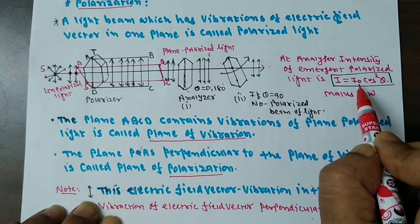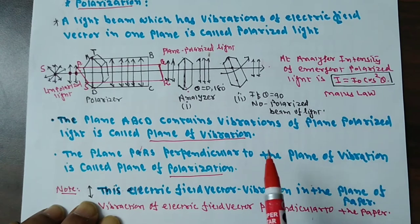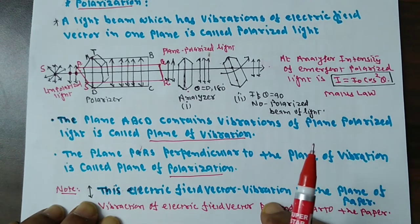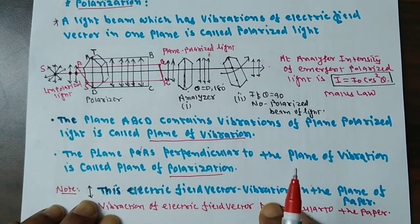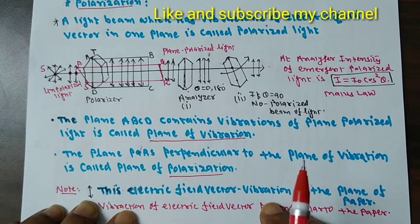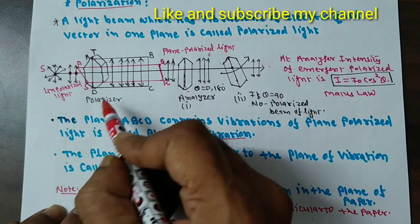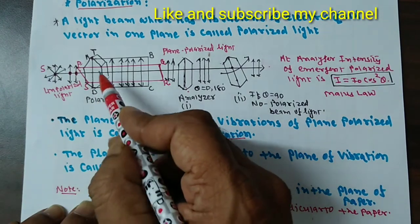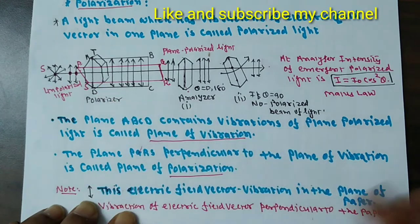I₀ is the initial intensity of light. In this way, we produce polarized light with the help of a polarizer or tourmaline plate.